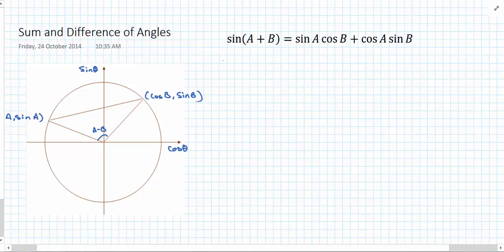So here we're going to substitute negative b for b. So I end up with sine of a plus negative b equaling sine of a cos of negative b plus cos of a sine of negative b.